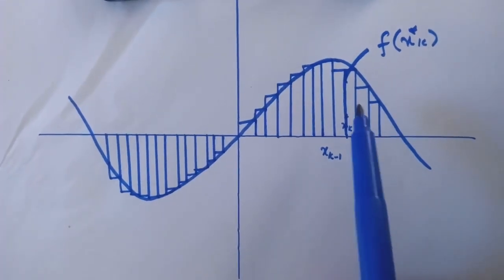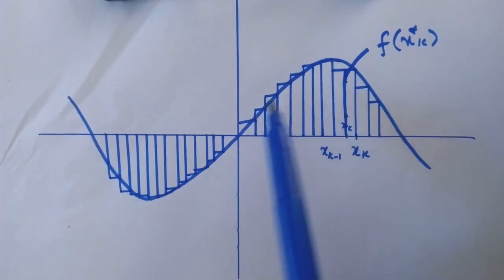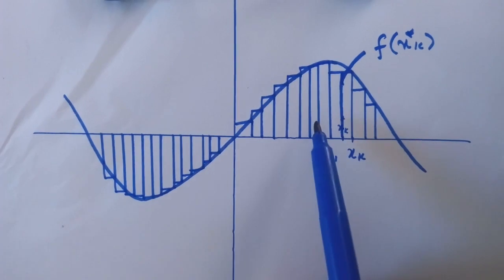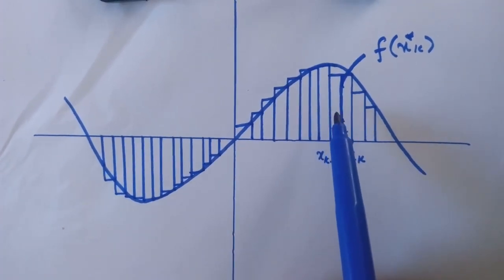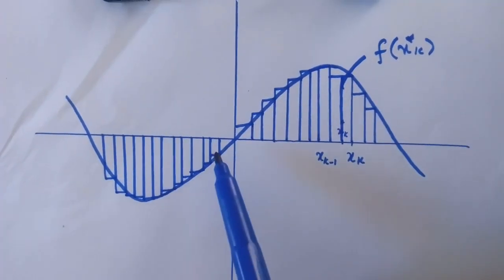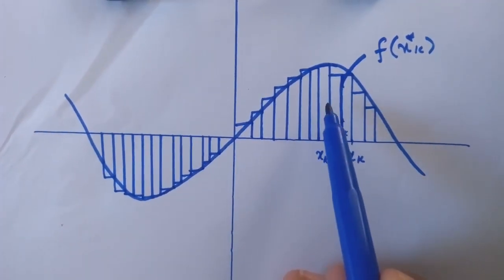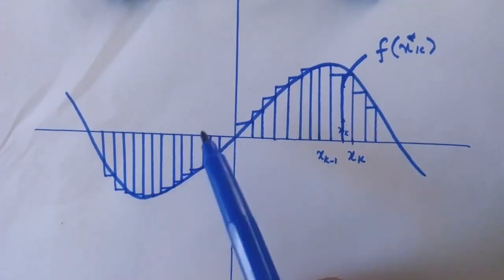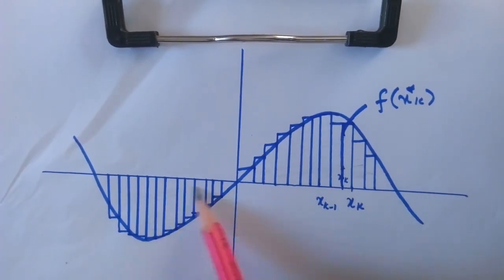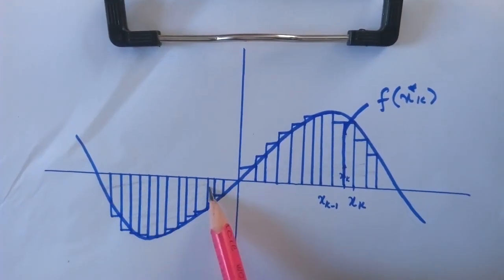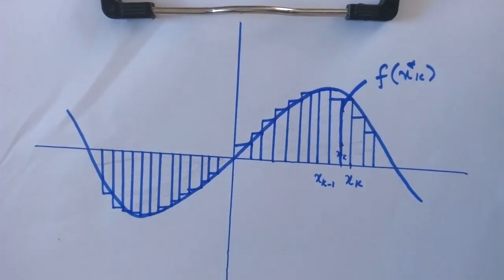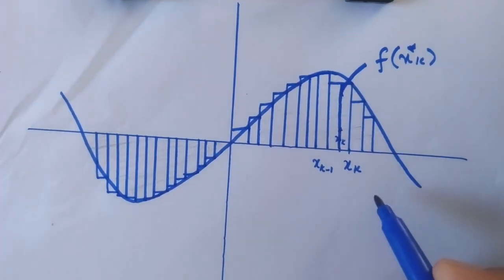If the number of rectangles increases, then the width will become very small. And when the width becomes very small, the total area of the rectangles will approach the exact area of the region, which is the definite integral.